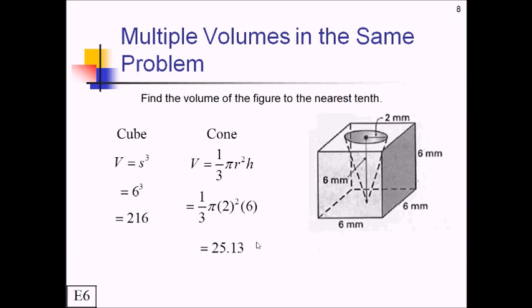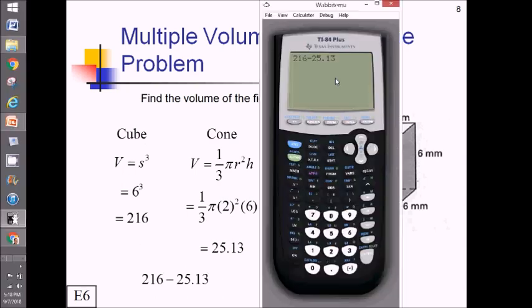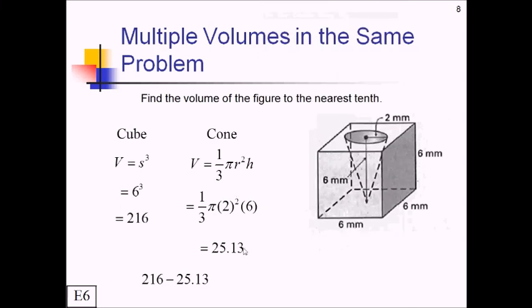And now what did we need to do? We needed to subtract this cone's volume from the volume of the cube. So let's do 216 minus 25.13. And I'm going to just shamelessly do this on the calculator. That comes out to 190.9. They said nearest tenth will do 0.9, and that's going to be cubic millimeters.